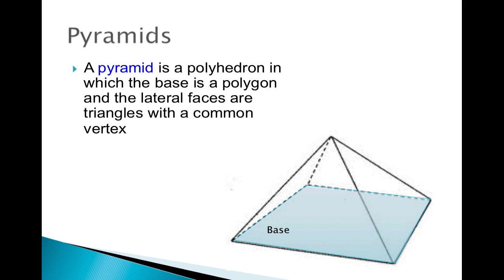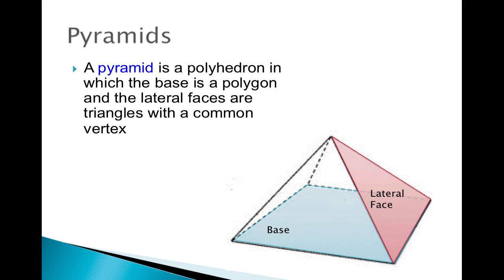The blue-gray area that just showed up — that is the base of your pyramid. There are four lateral faces for this particular pyramid. The base can be any type of polygon — right now we have a quadrilateral, but it could be five-sided, six-sided, you name it. The number of lateral faces will be determined by however many sides the polygon has.